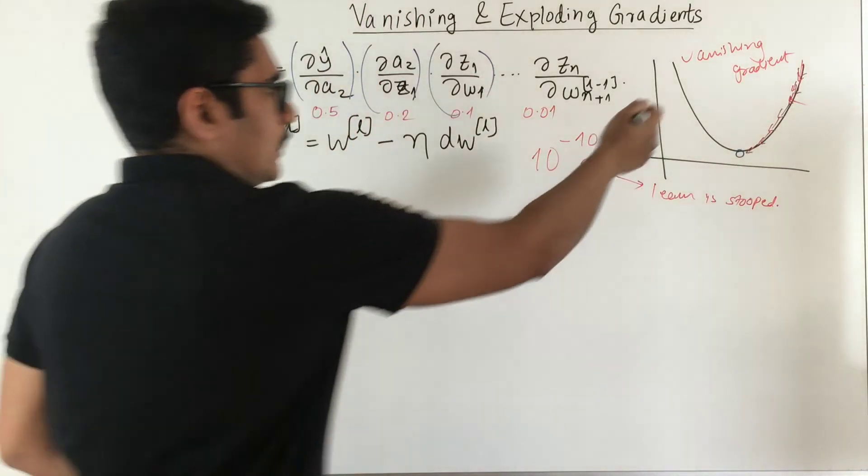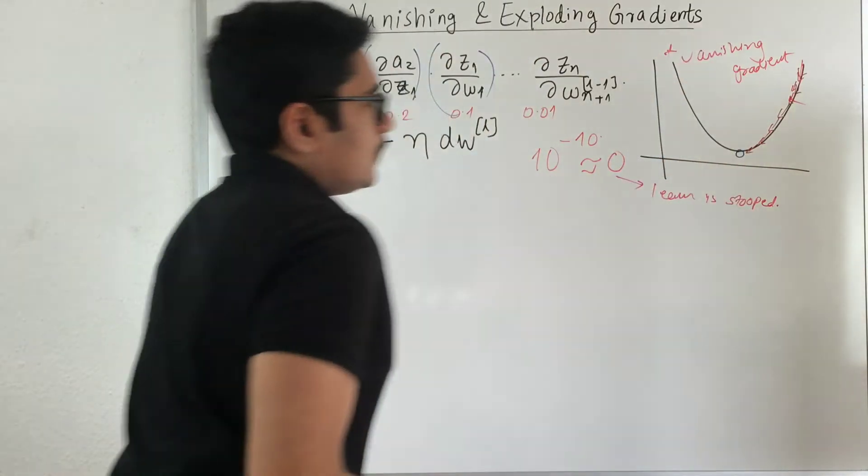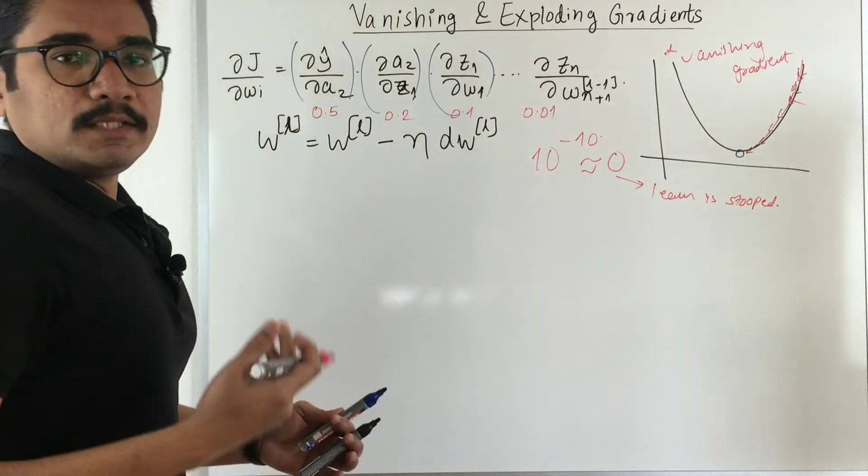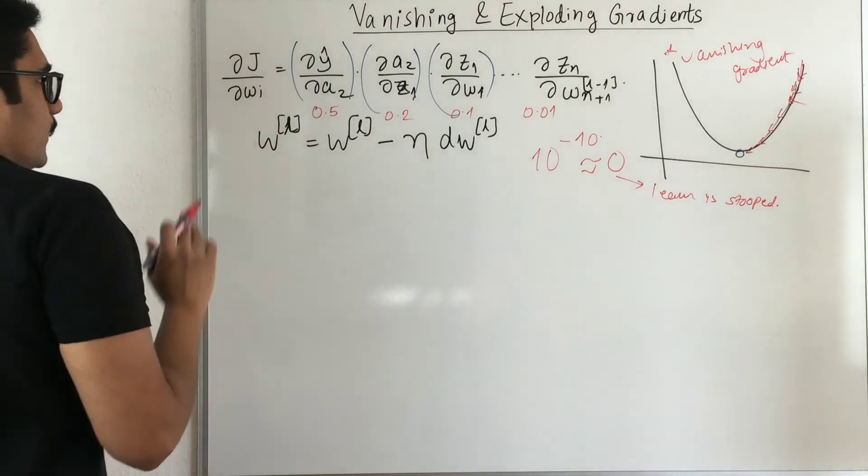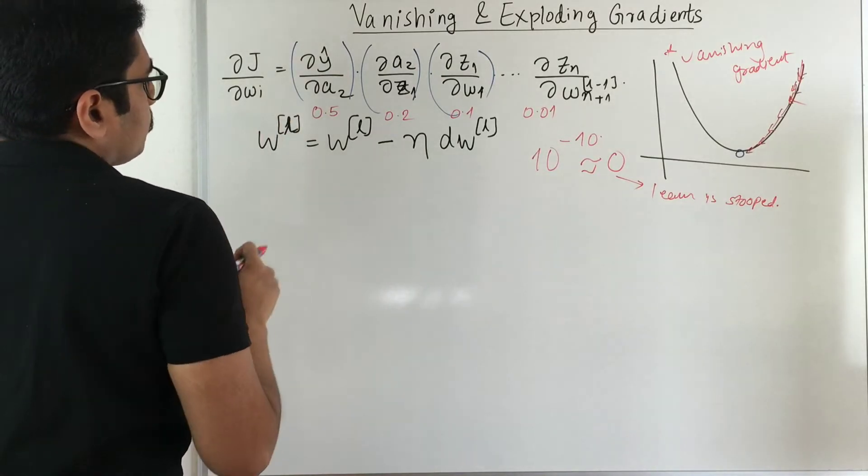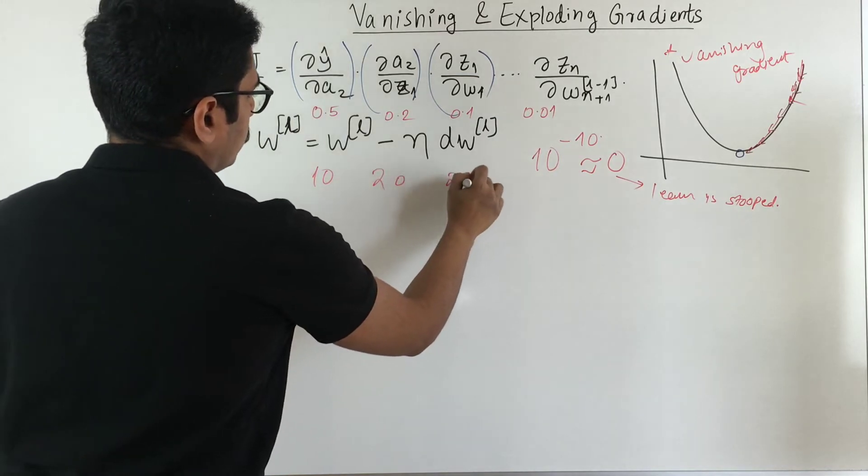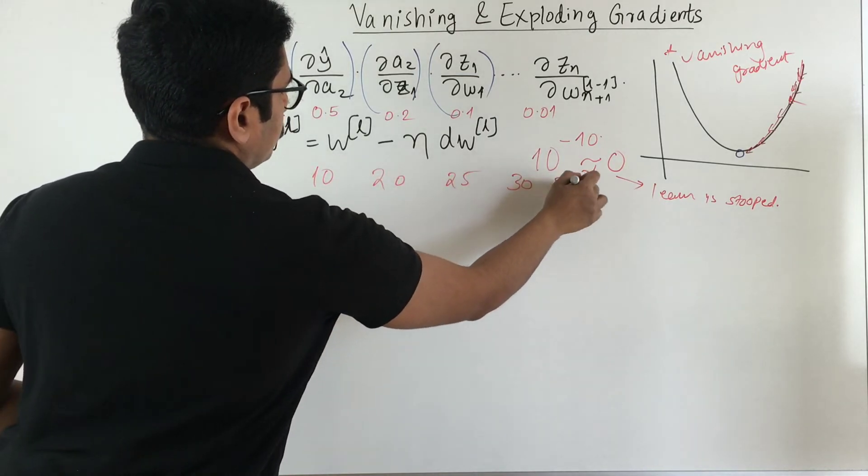You need to take care about this vanishing gradient most efficiently. And then we have what's called the exploding gradient. We have a similar case but instead for these values we have say 10, 20, 25, 30, 50, some higher values.